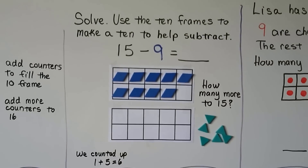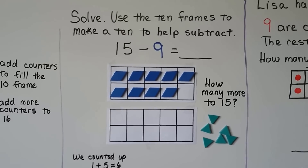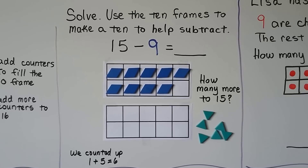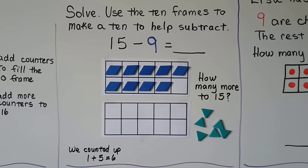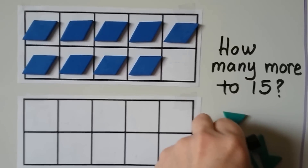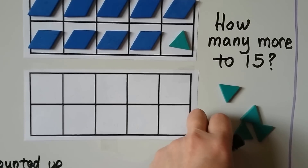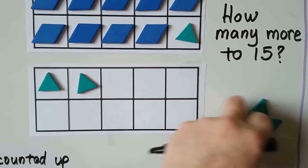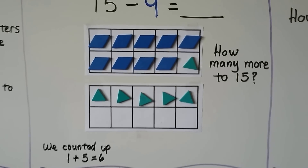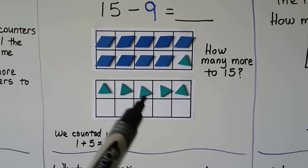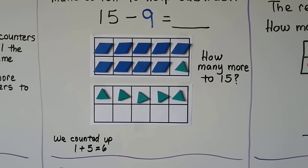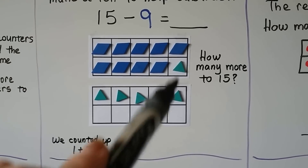We can solve using a 10 frame to make a 10 to help subtract. 15 minus 9 — we start with the 9 blue rhombus shapes. How many more do we need to add to get to 15? We fill the 10 frame: nine, ten. But we need 15 — eleven, twelve, thirteen, fourteen, fifteen. We counted up one plus five more, which equals six. So 15 minus 9 is equal to 6.